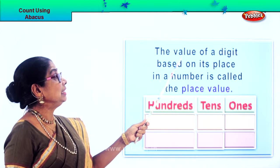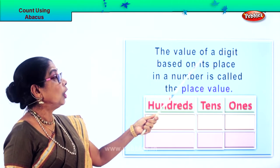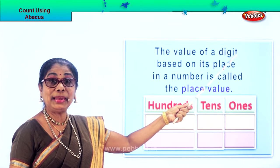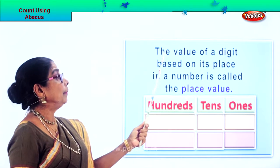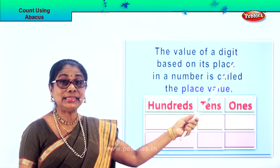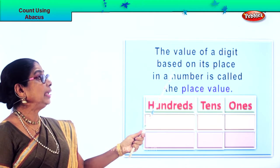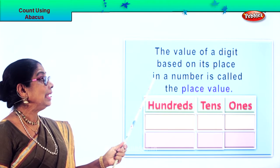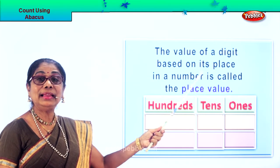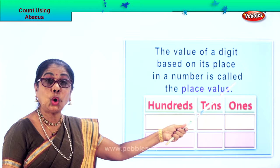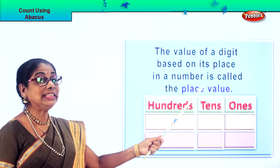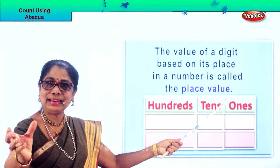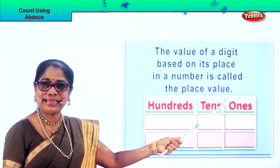The place value of a digit — digit means number — the place value of a digit based on its place in a number is called the place value. So where does the number stand? That's the value of that number.